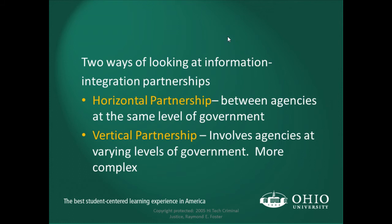There are two ways of looking at information integration partnerships. Horizontal partnerships involve agencies at the same level of government — city governments partnering with other city governments. Vertical partnerships involve agencies at varying levels, such as a city partnering with a county or the state, as in the MARCS radio system example.